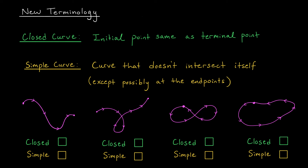In order to state this result properly, we're going to need some new terminology. First up is a closed curve — we say a curve is closed if its initial point is the same as its terminal point, sort of like a loop. Secondly, we have a simple curve: a curve that doesn't intersect itself, except possibly at its endpoints. For example, the first curve shown is not closed but it is simple. The second curve is not closed and not simple due to a crossing. The third curve is closed but not simple. The fourth curve is both closed and simple — the endpoints match up and there are no crossings.